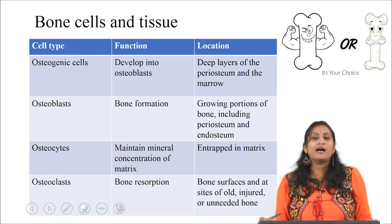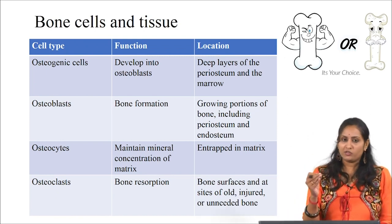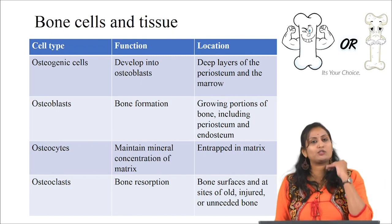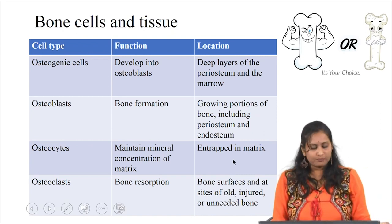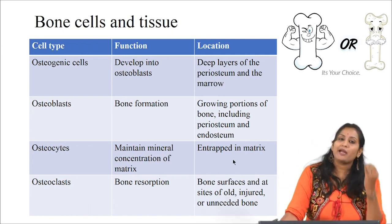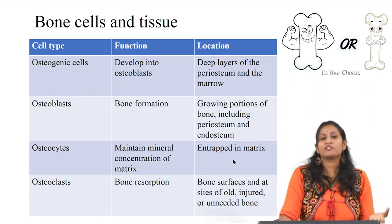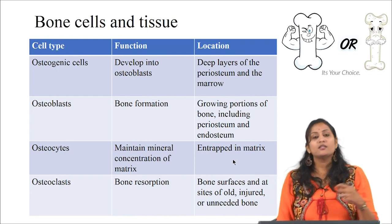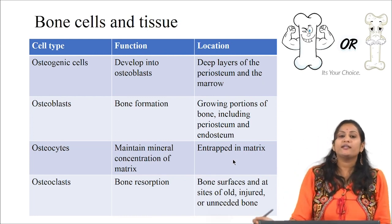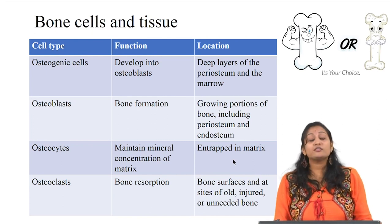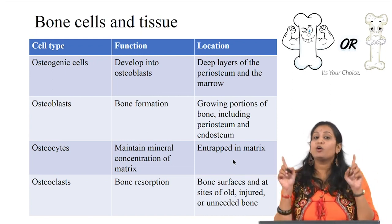Osteogenic cells are the only cells that can divide and they develop into osteoblasts; they are present in the deep layers of periosteum and marrow. Osteoblast cells are responsible for bone formation and are present in the growing portions of bone including periosteum and endosteum. Osteocytes are the primary cells of mature bone, located in lacunae, maintaining the mineral concentration of the matrix. Osteoclast cells are responsible for bone resorption and are present at bone surfaces and sites of old, injured, or unneeded bone. Osteoclast cells are formed from monocytes or macrophages — two types of white blood cells — and are not originated from osteogenic cells.